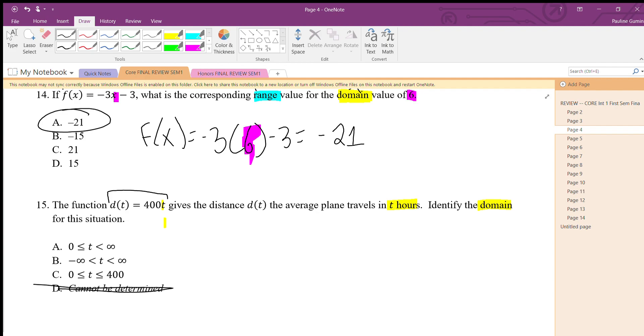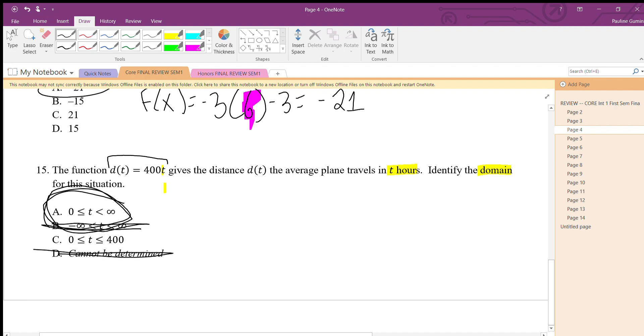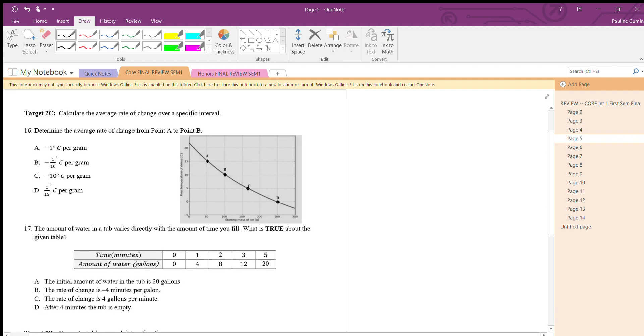I see a negative in there - time can't be negative. Now I'm between A and C. The only 400 I see in this problem is a number that's being multiplied by the t hours. Nothing else says that 400 is the largest amount or the longest amount of time that we can travel. Time in itself is infinite and it hasn't stopped yet, hopefully it doesn't. So letter A is our answer.